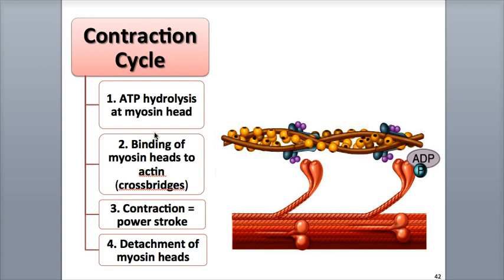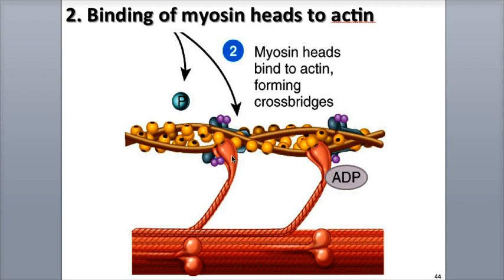Step B is binding. The myosin heads now attach to the myosin binding sites on actin, shown by these black dots, similar to the way a peg fits into a hole, and the bonds that form are called crossbridges. This binding releases the phosphate group from the myosin head, while ADP is still attached for the moment.